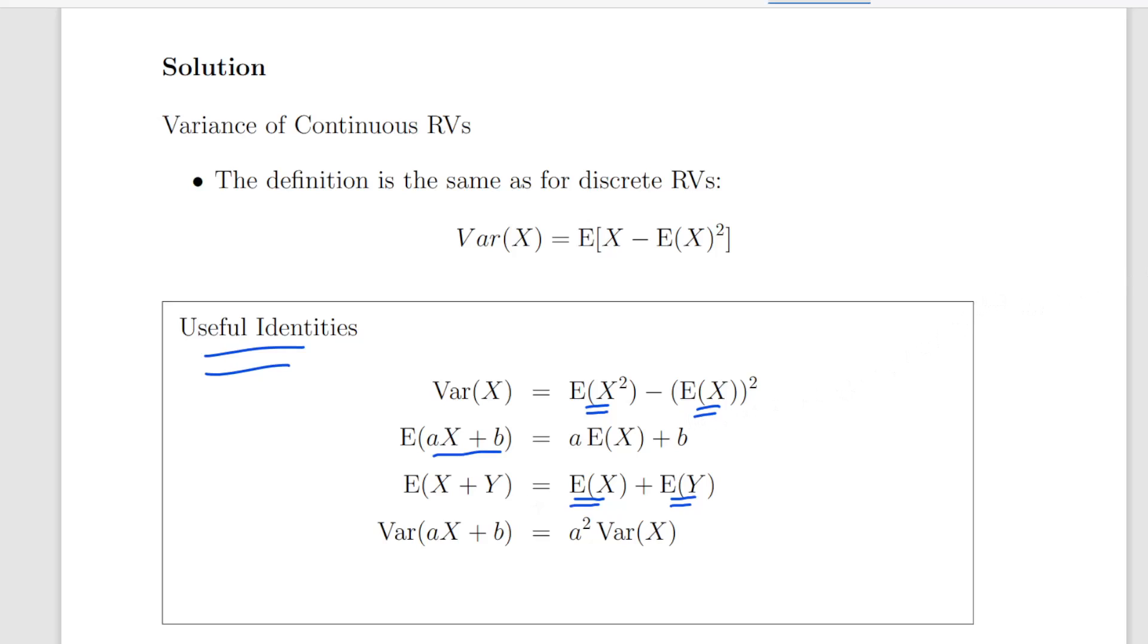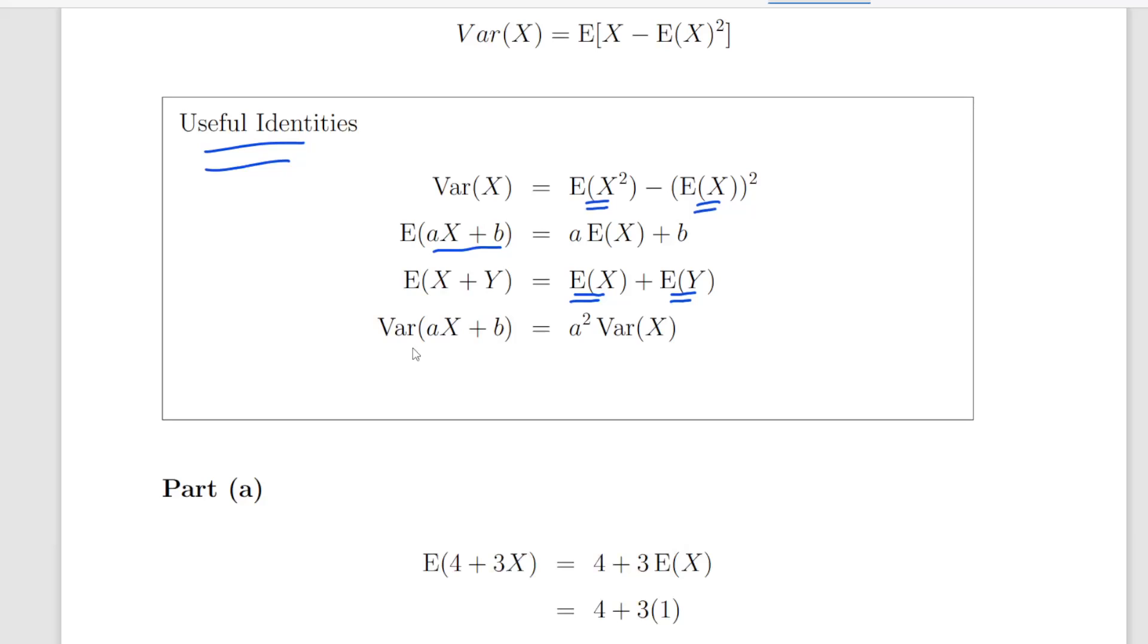Finally, the variance of aX plus b is a squared times the variance of X. The b term disappears, but what we get is a squaring of the a term there.